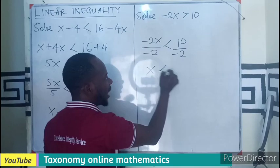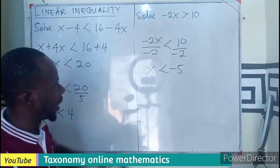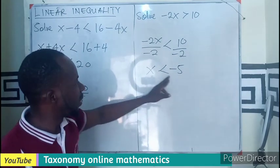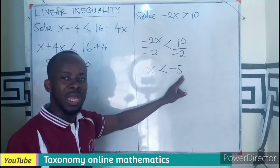This will leave us x < -5. Instead of saying x is greater than -5, the value becomes x < -5.